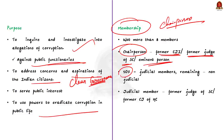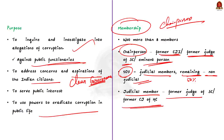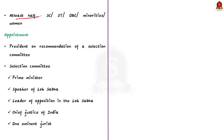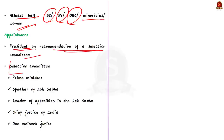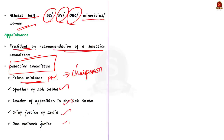Out of the total members, 50% shall be judicial members and 50% non-judicial members. Judicial members must be either a former judge of the Supreme Court or a former Chief Justice of a High Court. At least half of the Lokpal members must be from scheduled castes, scheduled tribes, other backward classes, minorities, and women. The chairperson and judicial members are appointed by the President on the recommendation of a selection committee consisting of the Prime Minister as chairperson, the Speaker of the Lok Sabha, the Leader of Opposition in the Lok Sabha, the Chief Justice of India or a nominated Supreme Court judge, and one eminent jurist.